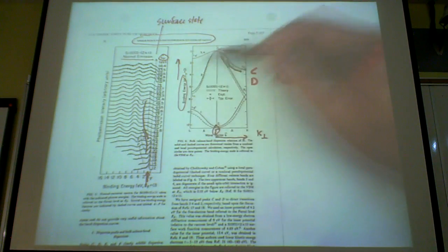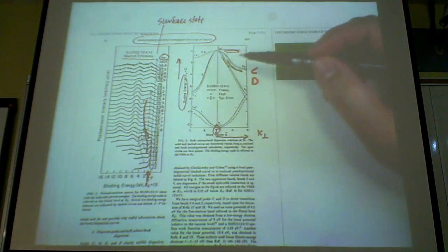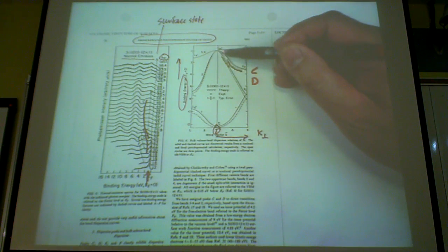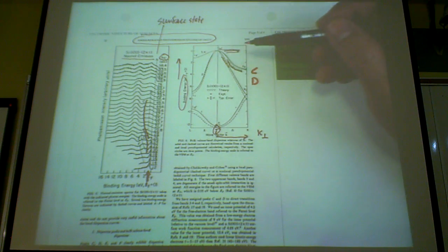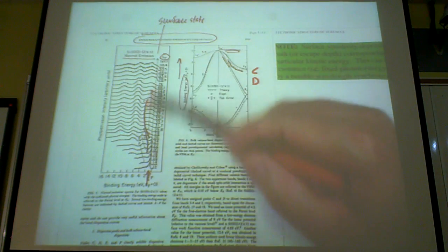If you are looking at band C, for example, and you're changing your photon energy, you're changing k perpendicular. You are moving in this direction, which is in the perpendicular direction of the surface in the Brillouin zone. Your energy position is moving. It's changing like this. And same with structure D.